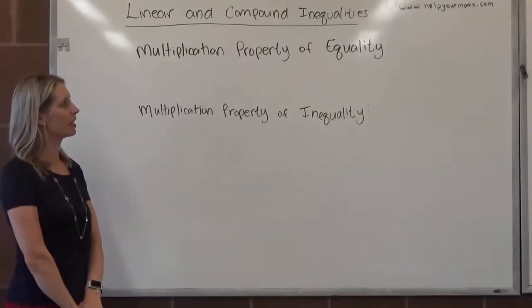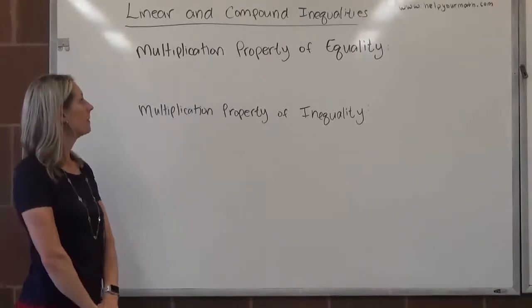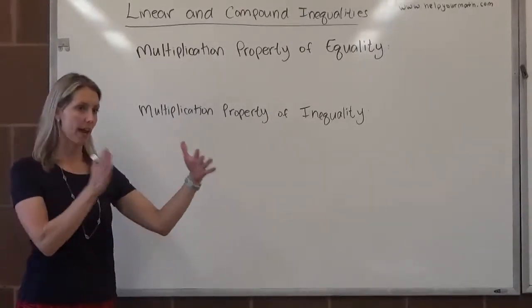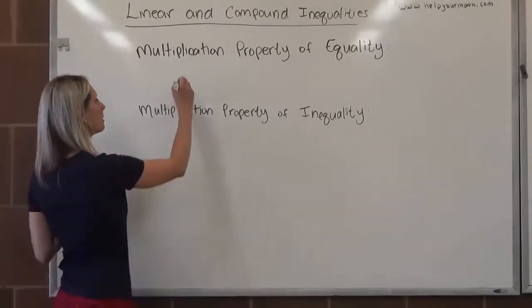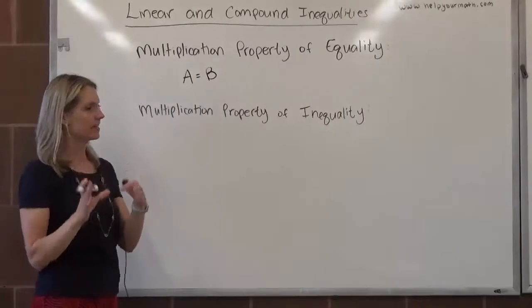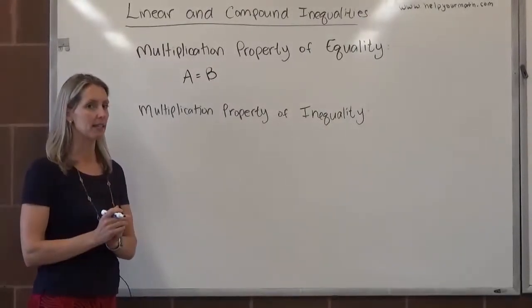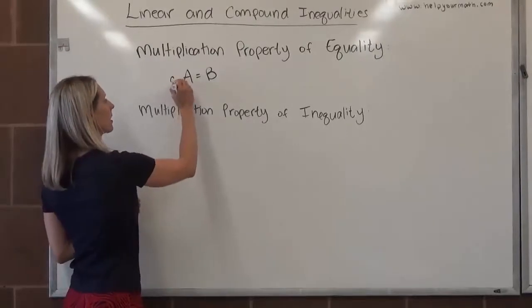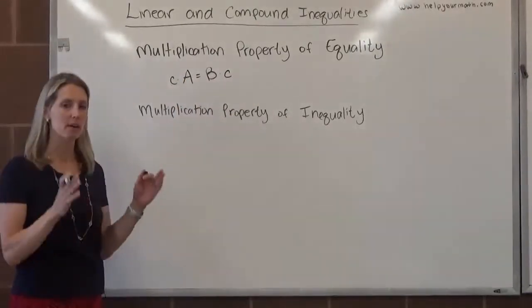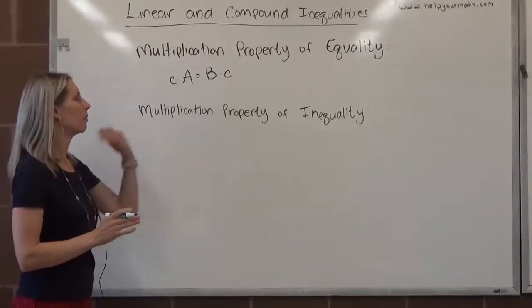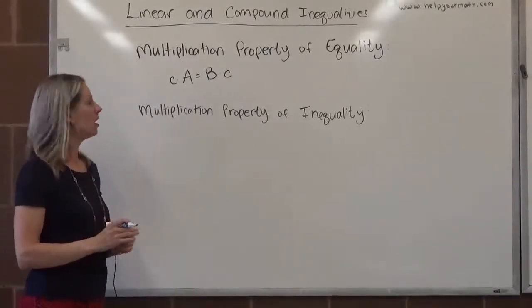You might recall from when we were talking about solving linear equations that the multiplication property of equality states if we have an equation, so let's say A equals B, then I can multiply the same value to both sides and it doesn't change the equality. So I can say I'm going to multiply this side by C and I'm going to multiply this side by C. It doesn't matter what C is, as long as it's not zero, it does have to not be zero, it will maintain the equality.